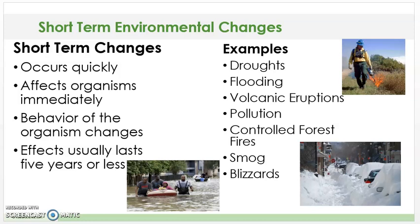There are two types of environmental changes. The first type we're going to discuss are short-term environmental changes. Short-term changes occur quickly, hence the word short. They affect organisms immediately, the behavior of the organism changes, and the effects usually last five years or less.